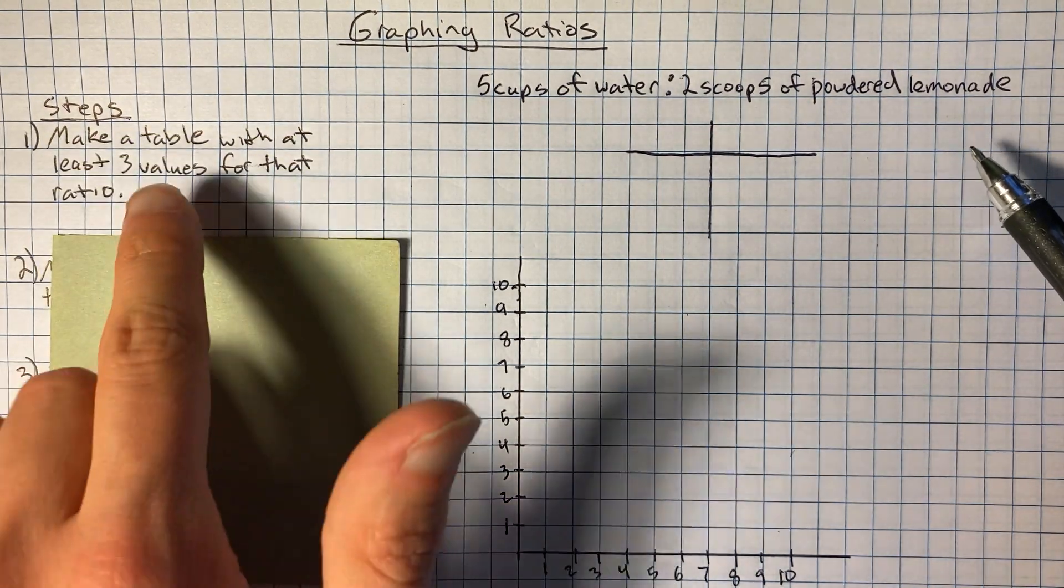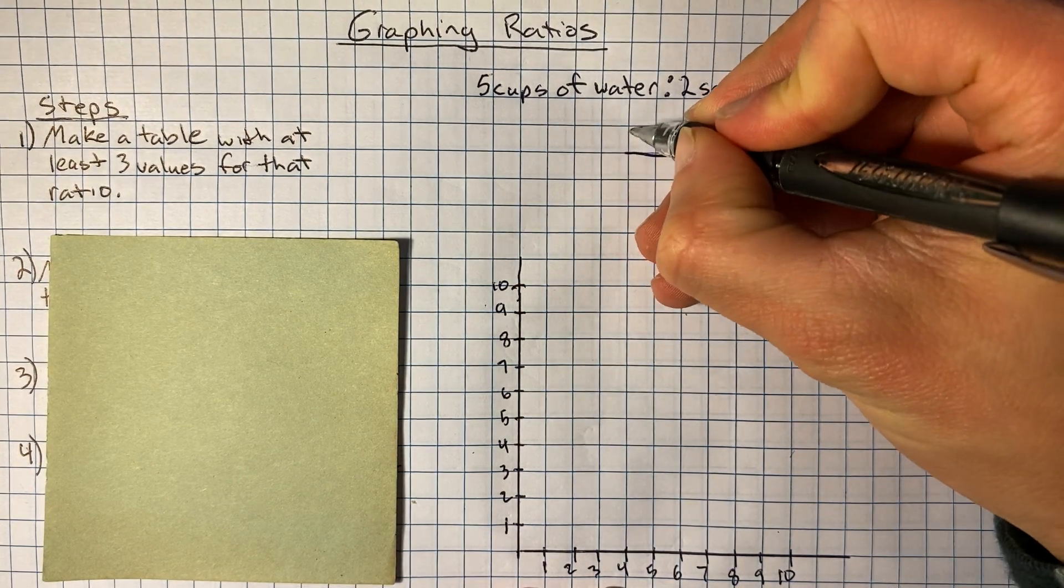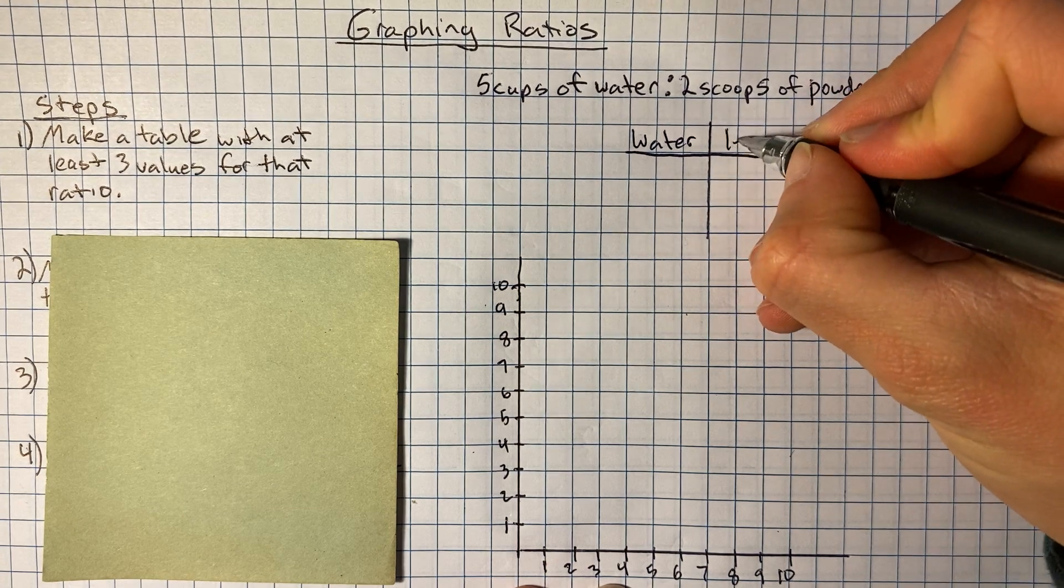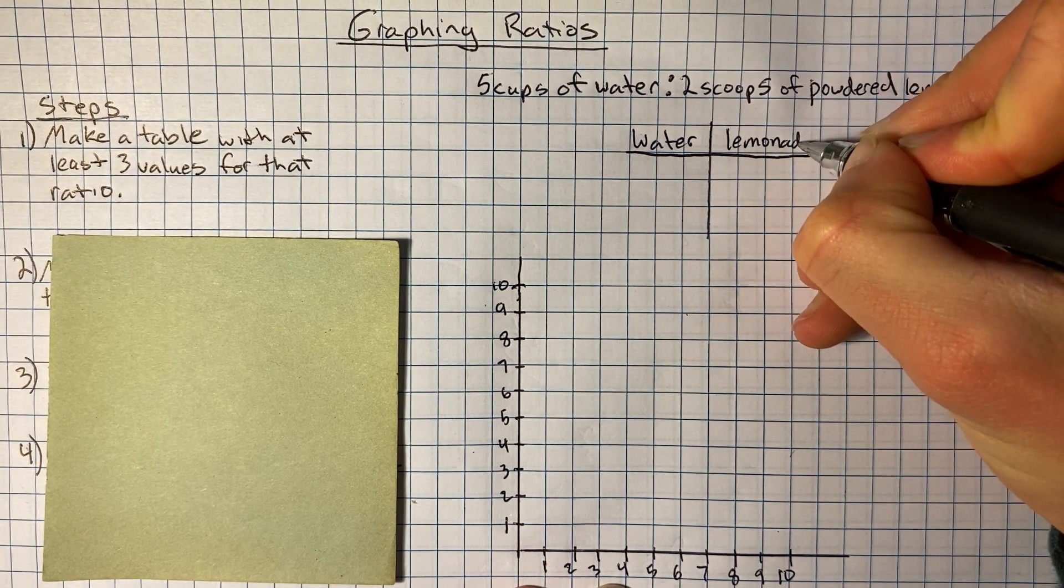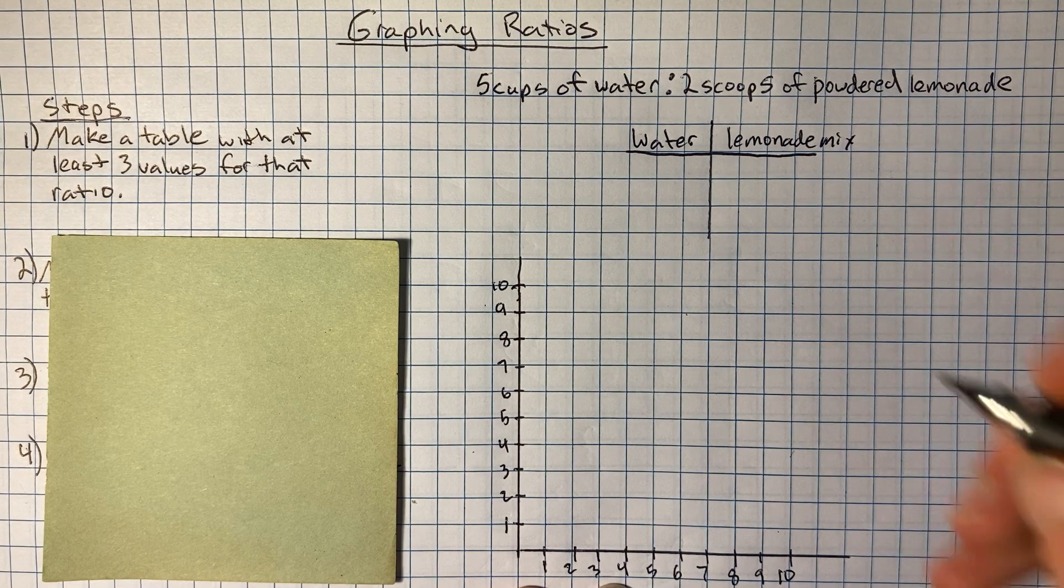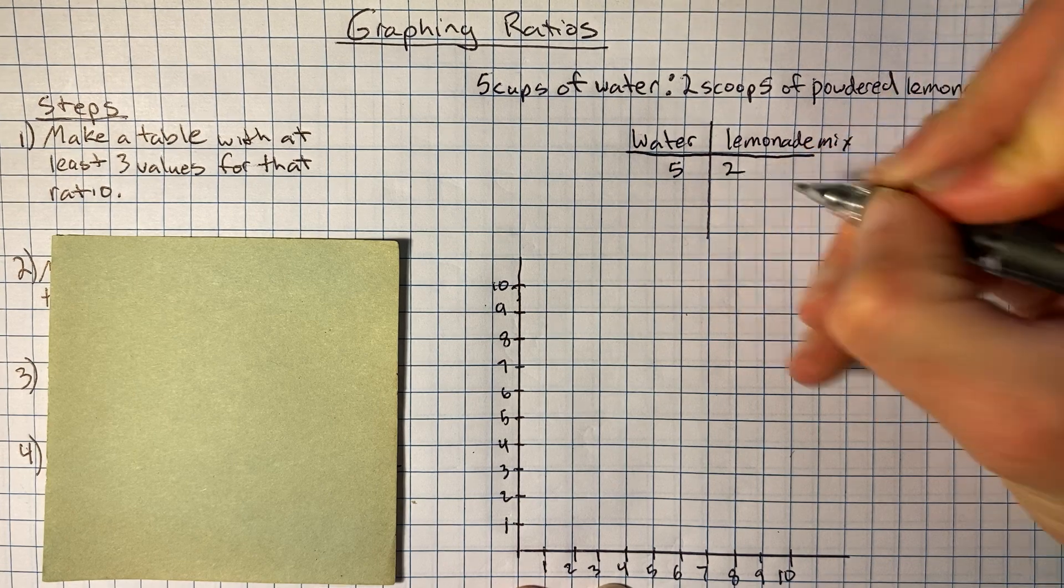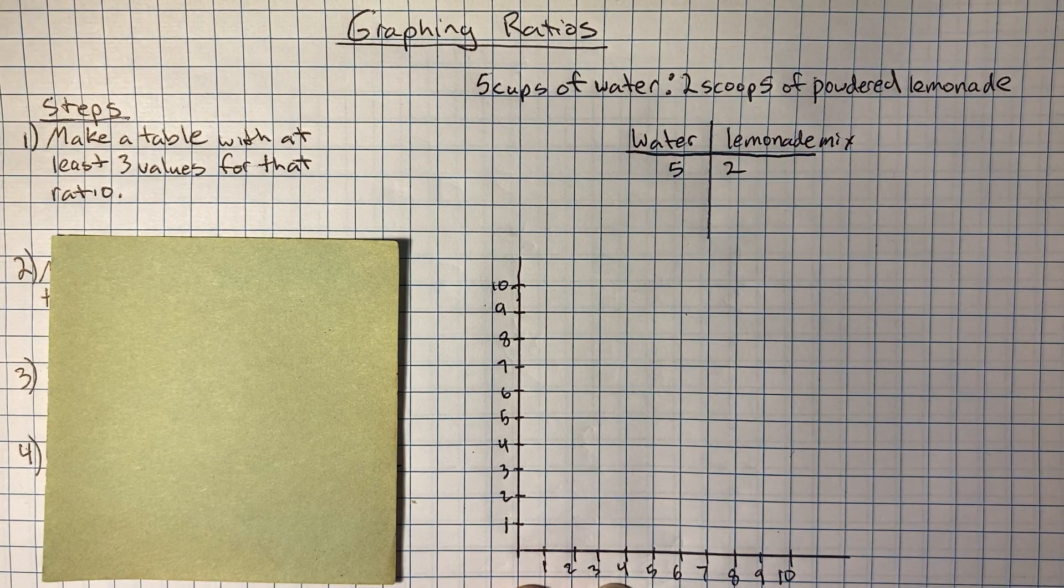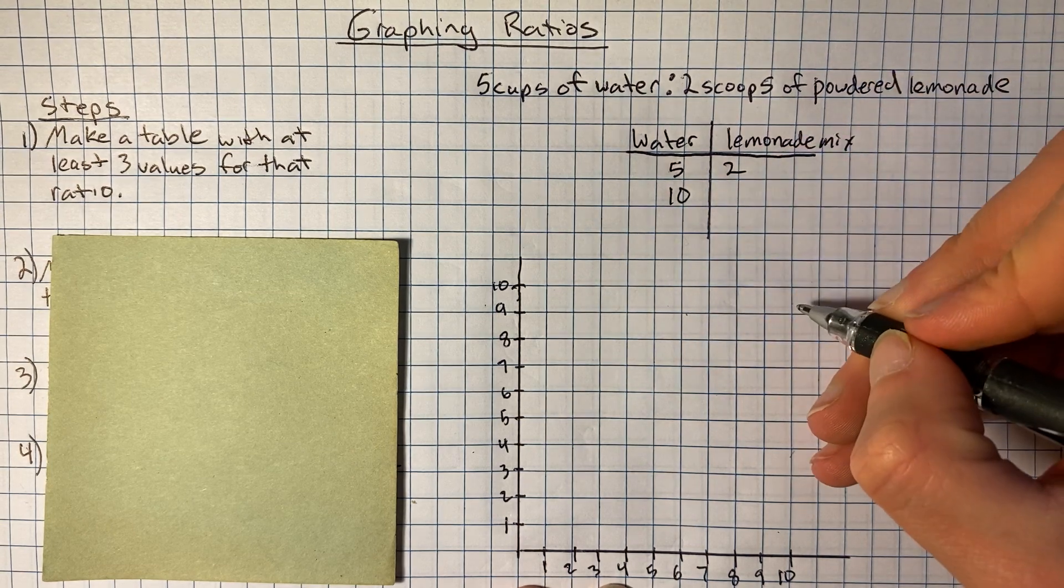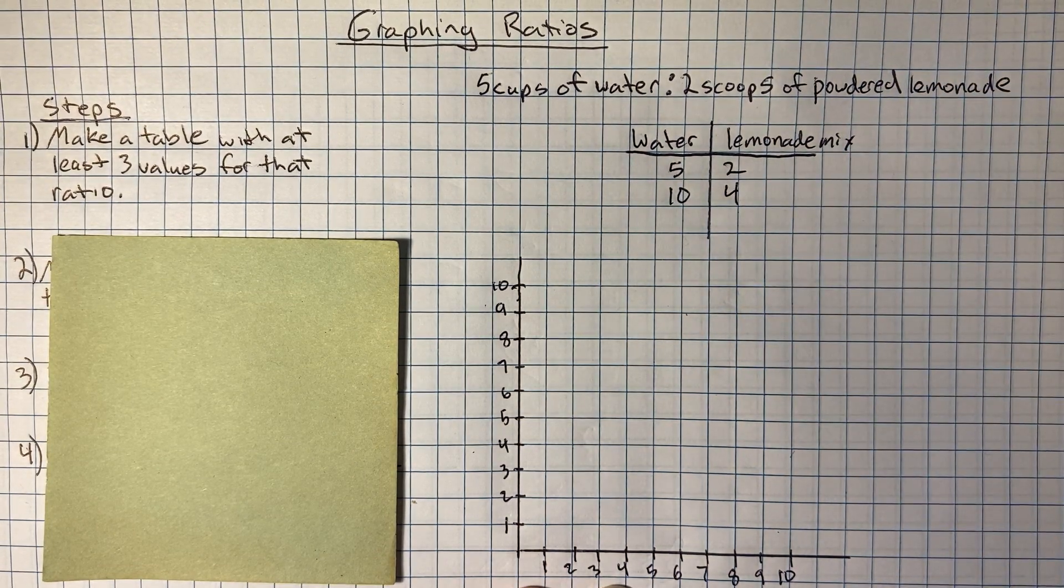To graph that first, we're going to make a little table with at least three values for that ratio. So I'm going to put water on the left side of my table, and I'm going to put the lemonade mix on the right side. And so that means if I had five cups of water, I would have two scoops of lemonade mix. Another value that would also be true, we could double it. We could say if you had 10 cups of water, that would have four scoops of lemonade mix.